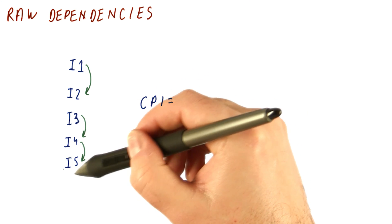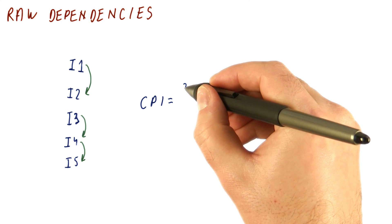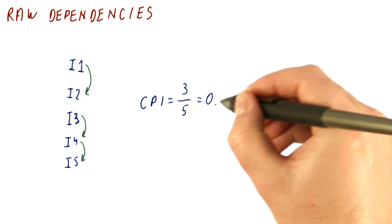And then we still need a third cycle to execute I5, which has to wait for I4. So we have spent three cycles for five instructions, which is going to be a CPI of 0.6.